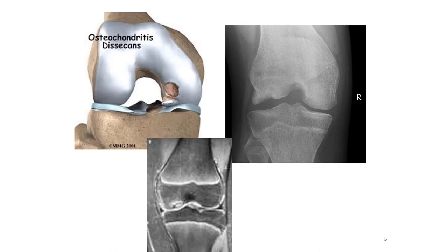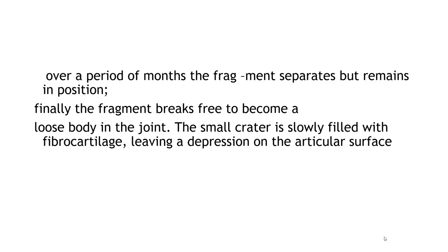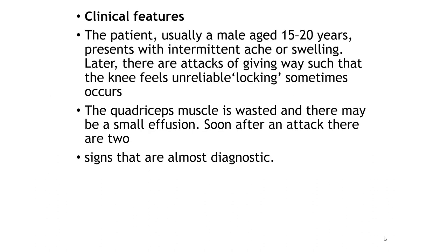This diagram shows the location of osteochondritis dissecans on the lateral aspect of the medial femoral condyle. The X-ray and MRI show the defect. Over a period of months, the fragment separates totally and becomes a loose body, and its place is filled with fibrocartilage.